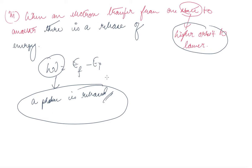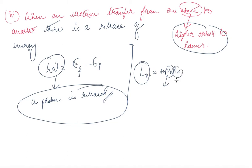Looking at Bohr's second postulate on quantization, the energy of the orbits is quantized. For angular momentum L_n, we have L_n = m·v_n·r_n, where v_n is the velocity at the nth orbit and r_n is the radius of the nth orbit. This equals n·h upon twice pi, where n is the orbit number and h is Planck's constant.